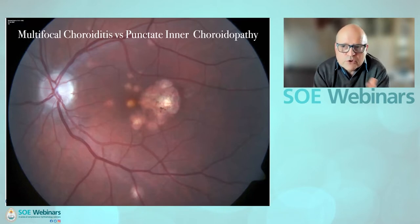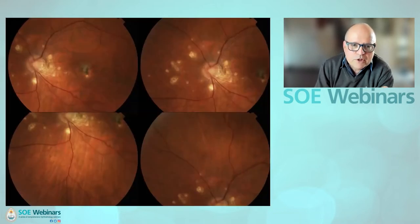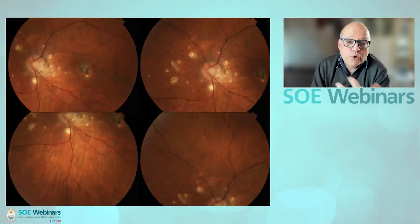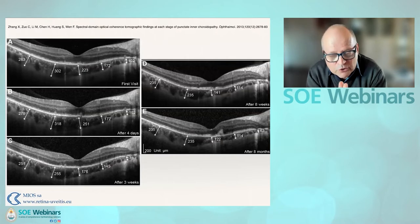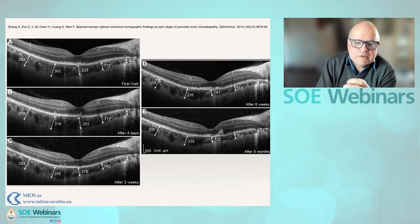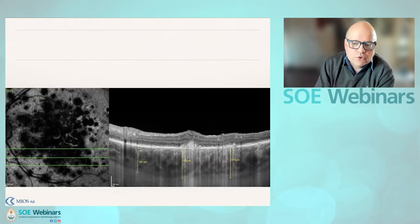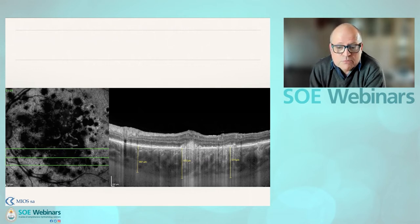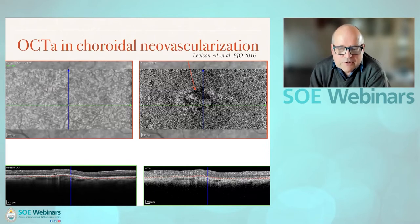Multifocal choroiditis and punctate inner choroidopathy (PIC) are two similar diseases affecting the posterior pole. PIC has small lesions, often more nasal. Both are associated with neovascularization of the macula, which will respond to anti-VEGF, but more importantly also to non-steroidal medications targeting the inflammation. We do see choroidal thickening in this disease. The process over the first visit and eight months later shows the thinning is not complete — most of the time we don't see complete thinning in any of these diseases, but you can monitor response to therapy by looking at choroidal thickness. In one case, a patient with neovascular membrane who didn't want treatment came in with a massive increase in choroidal thickness. She responded to intravitreal treatment for the neovascularization, but there was no change at the choroidal level. Choroidal neovascularization in this disease is what you want to recognize.